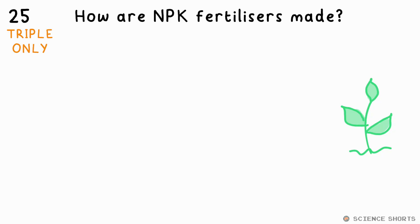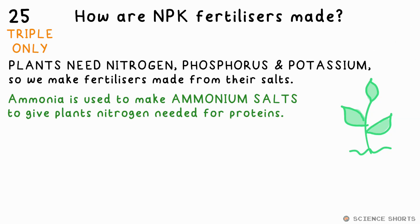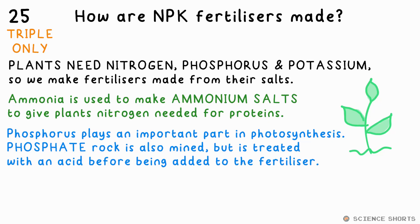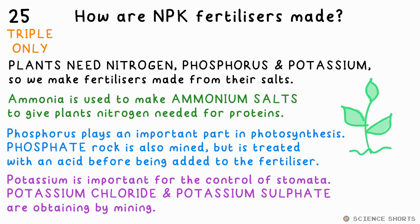Question 25. What chemicals are used to make NPK fertilisers? Ammonia is used to make ammonium salts to give plants the N — nitrogen — in the NPK; they need it for amino acids and therefore proteins. Phosphate, the P, is a rock that can be mined then treated with an acid before being added to the fertiliser — it plays an important part in photosynthesis. Potassium chloride and potassium sulphate are obtained by mining; the potassium, the K in NPK, is needed for plants to regulate the opening and closing of their stomata.